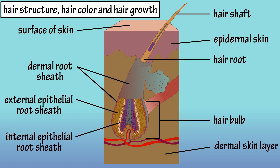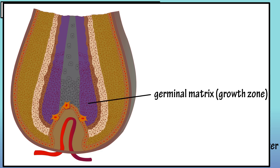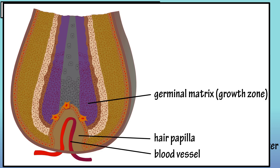At the bottom of the follicle in the hair bulb is the germinal matrix, which consists of epithelial cells. Protruding into the germinal matrix is the hair papilla, which is composed of connective tissue and houses nerves and blood vessels that nourish the germinal matrix.